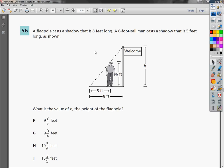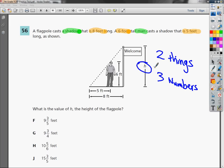So what we know is that we have a man and we have a shadow. That seems like two things to me. We also have 6 feet, 8 feet, and 5 feet. Well, that's three numbers. And we want this other value, so we're looking for the fourth number.